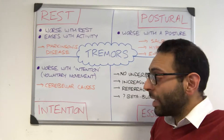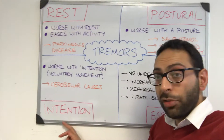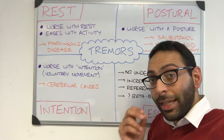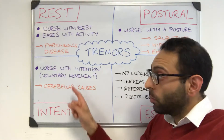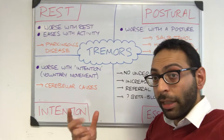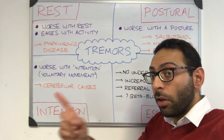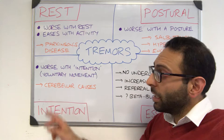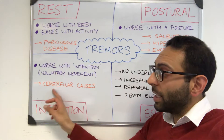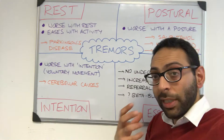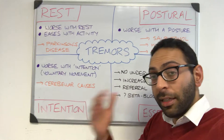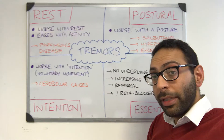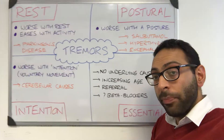Then the third one is intention tremor, worse with intention — so worse with voluntary movements when you're intending to do something, like finger to nose for example. Think about cerebellar causes here, as lots of things can cause cerebellar problems which in turn can lead to intention tremor.